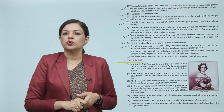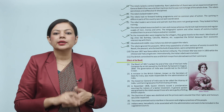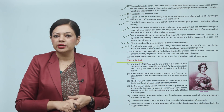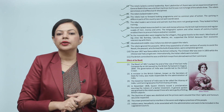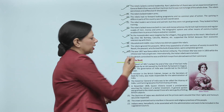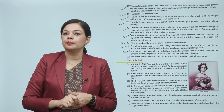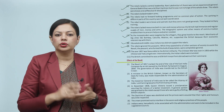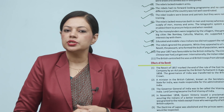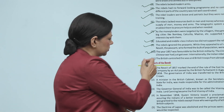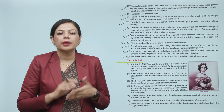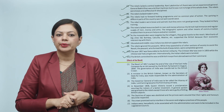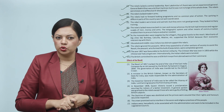The year 1857 was favorable to the British military. The Crimean War was over in 1856 and the Chinese war had just ended. Internationally, the Indian rebels were isolated. The British controlled the seas, and British troops from abroad were at their command.